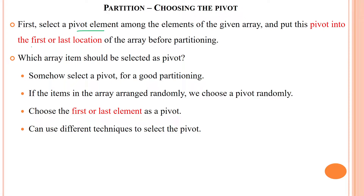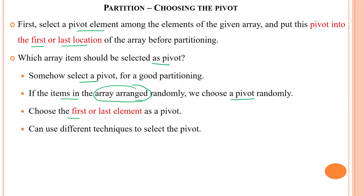We can select the pivot element as the first index or last index of the given array. The pivot element is selected to compare the list of elements — either greater or smaller — and based upon that we will partition the list into two halves. If the array items are arranged randomly, we can also select the pivot randomly. Mostly, we select the pivot element from the first index or last index of the array.